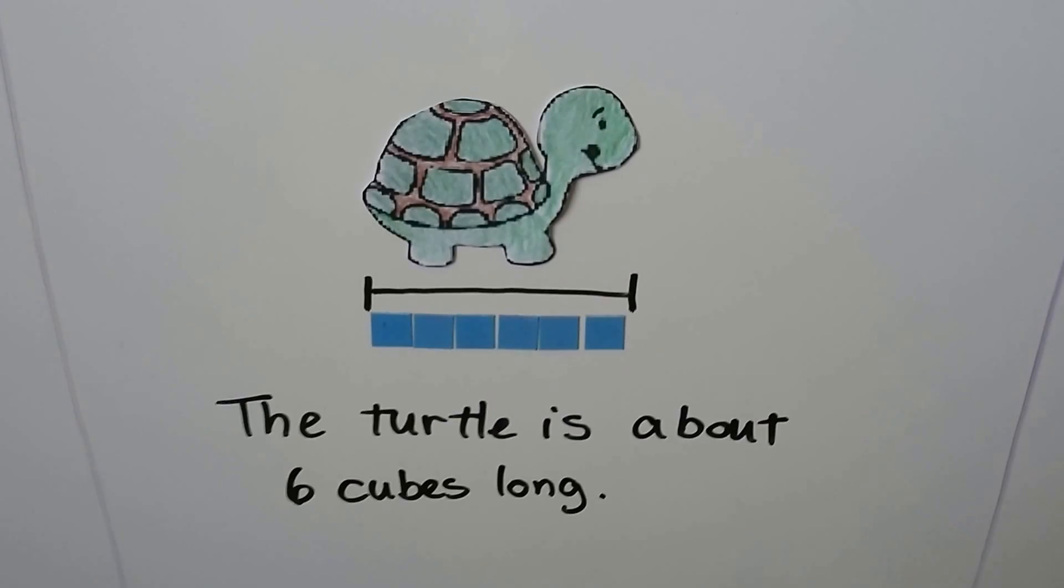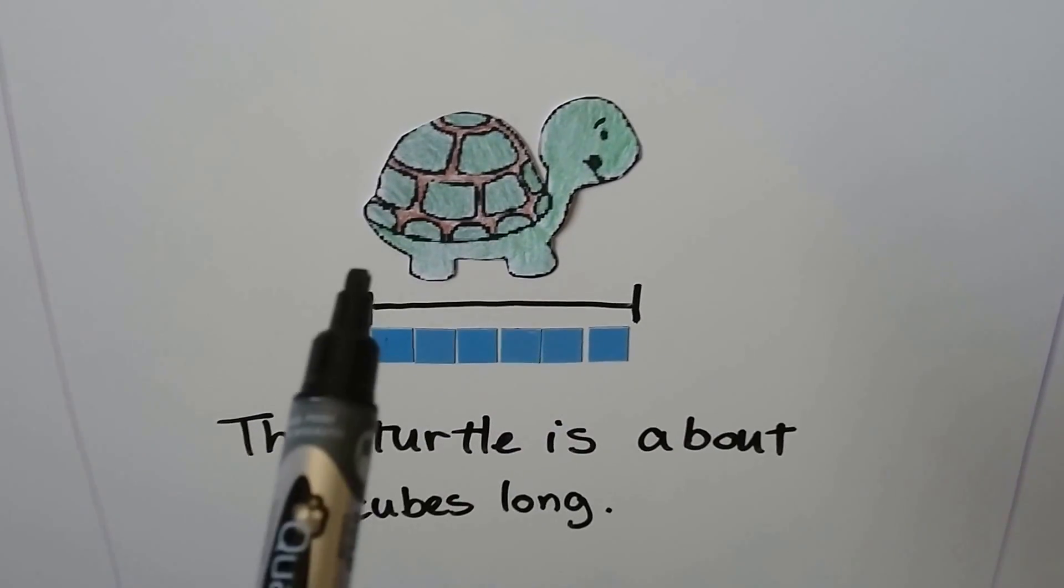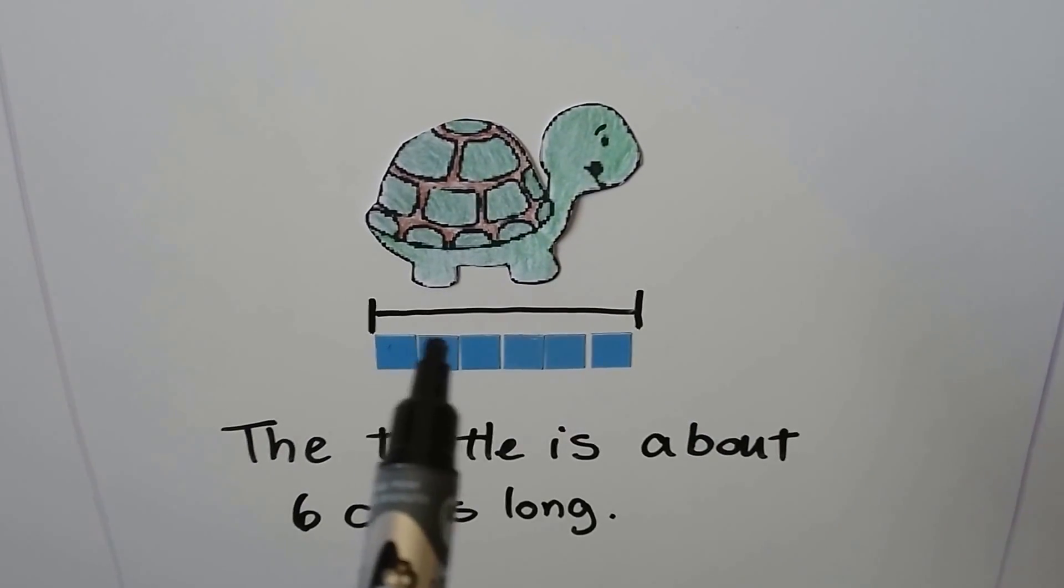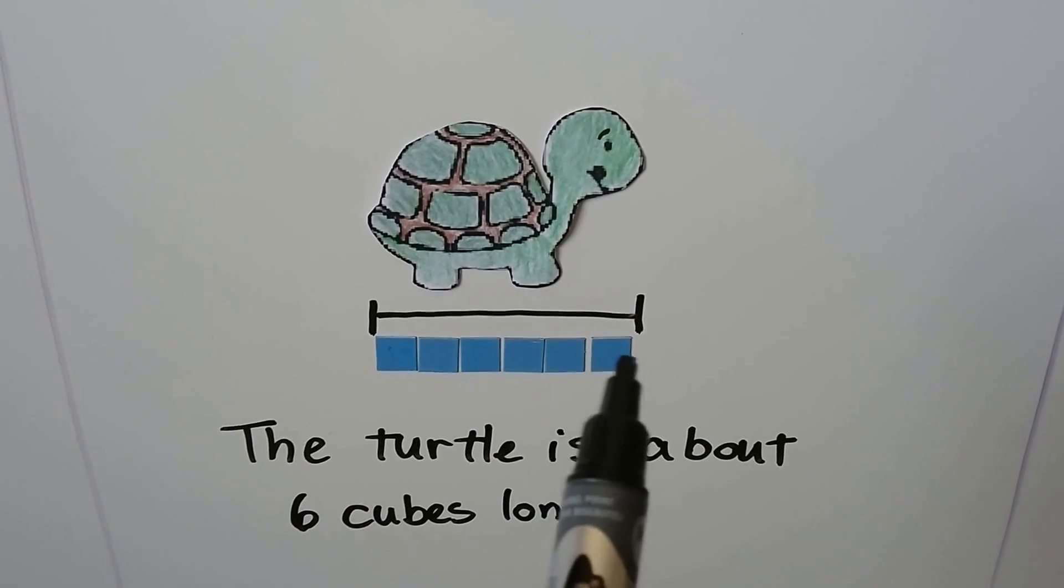The turtle is about six cubes long. From the back to the front, one, two, three, four, five, six.